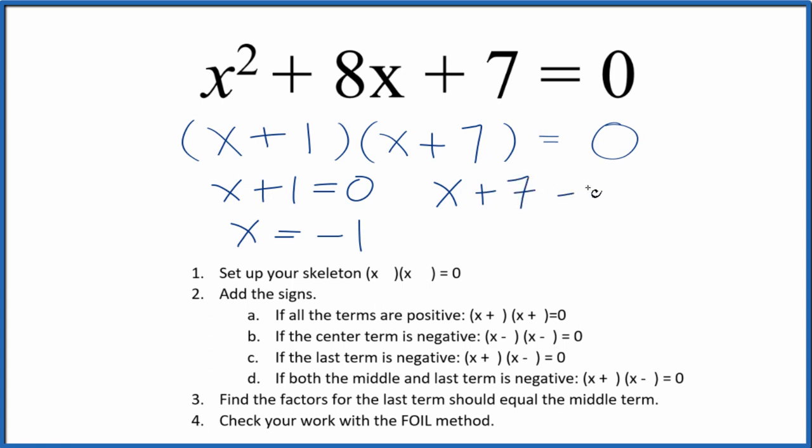X plus 7, that equals 0. Add a negative 7 to both sides. X equals negative 7. So if you put negative 7 in for x, and you do the math, all of this side here, it'll equal 0. Likewise, if you put negative 1 in for x and do the math, this side of the equation, it equals 0.